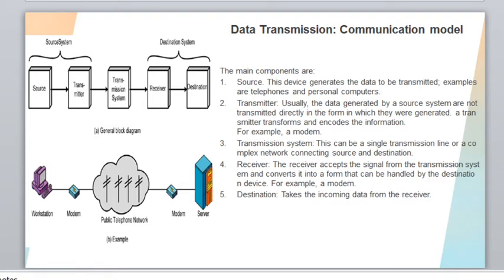The next component is transmission media — basically the medium through which we are transferring the messages or data between source and destination. The transmission media connects source to destination. The next component is the receiver, which accepts the signal from the transmission media and converts it into a form that can be handled by the destination.